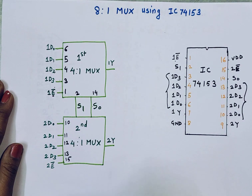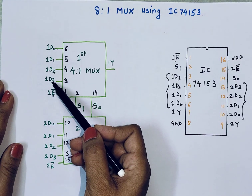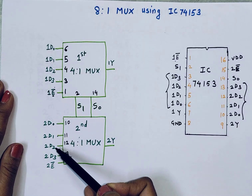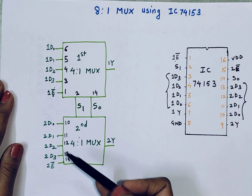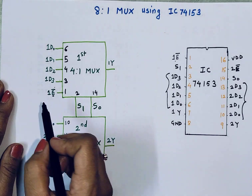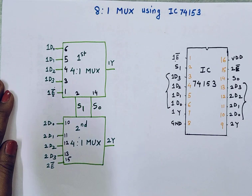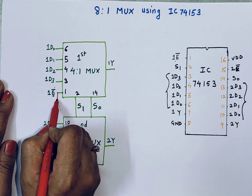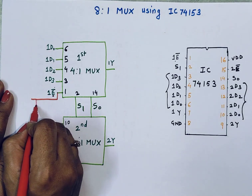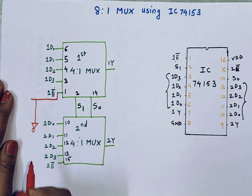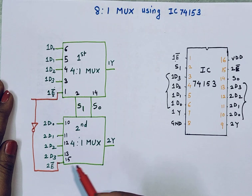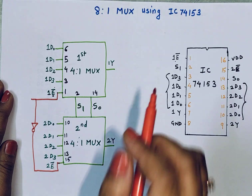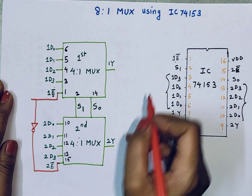For the first 4 inputs, the first 4-to-1 multiplexer must turn on. After 1D3, the second MUX handles D4, D5, D6, and D7. I will put an inverter on the enable line — the first enable connects directly, and through the inverter it goes to the enable pin of the second 4-to-1 multiplexer.